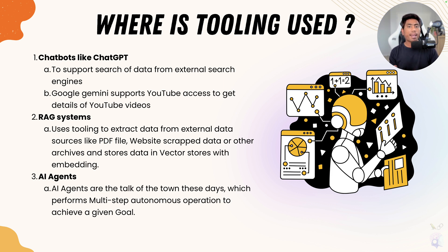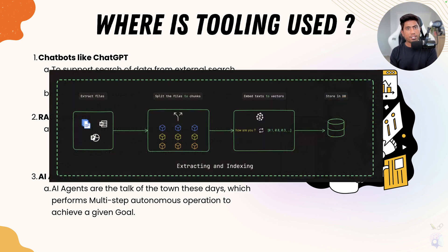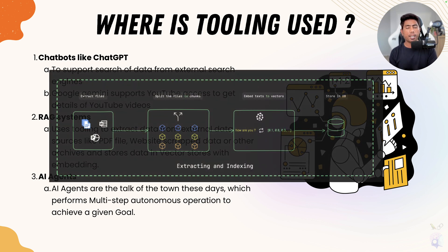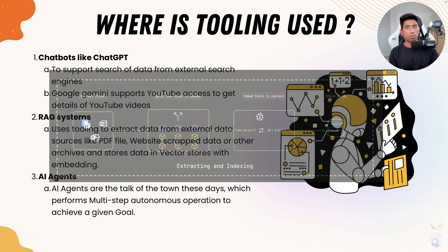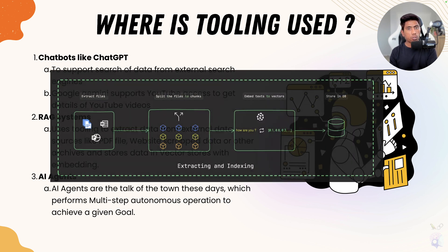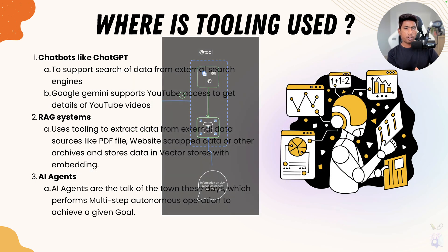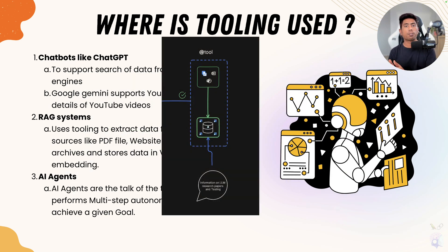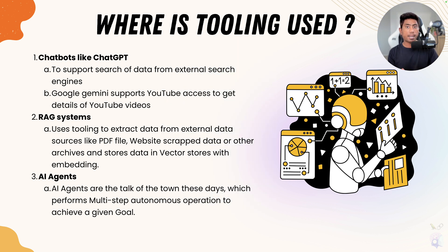Similarly, if you're going to build a RAG — Retrieval Augmented Generation — system, these tools will also be trained using external data like PDFs or domain-specific knowledge for your company. You store all the extracted, chunked, and embedded data into vector stores, and then that data can be retrieved through tooling and fed back to your large language model so it can respond to the question you're looking for. That is how RAG systems use tool calling.